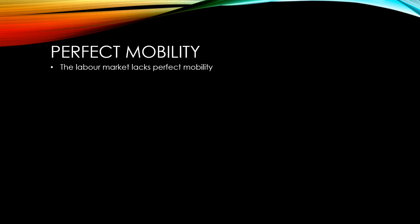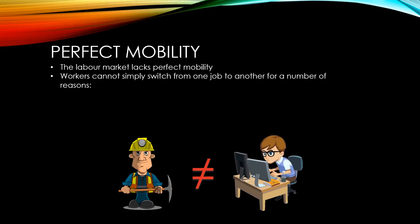The labour market is said to lack perfect mobility. What this means is that in a lot of cases, workers cannot simply switch from one job to another. A major problem lies in the fact that skills for different jobs are very different. You couldn't expect someone who's lost their job as a miner to instantly start becoming a computer programmer, because they wouldn't know the required skills to be able to do so. Some workers are unwilling to relocate to where work may be available. This may be due to family reasons, or it could be because they own property in one particular area and don't wish to move away to another area where they wouldn't be able to afford the same things.